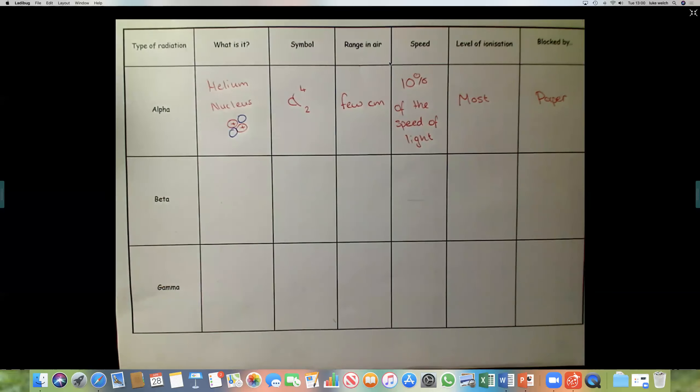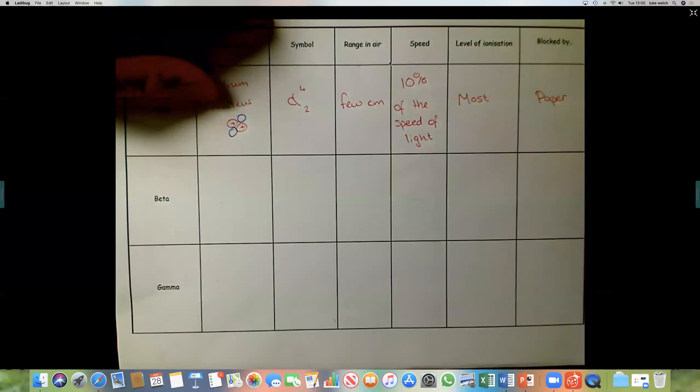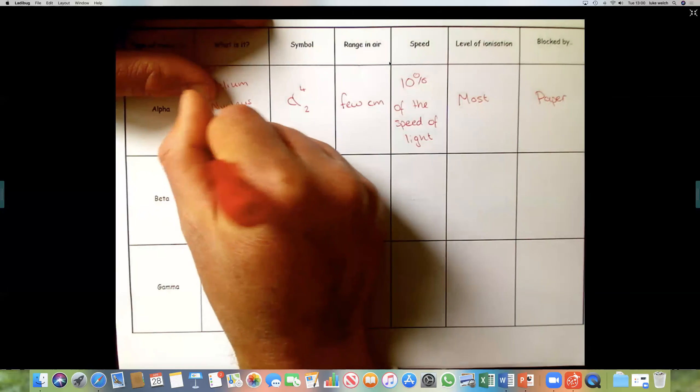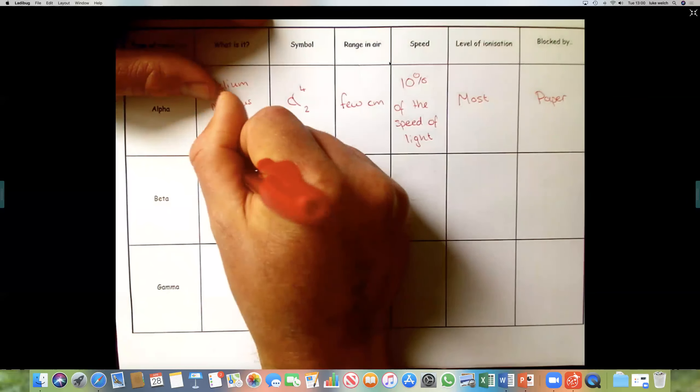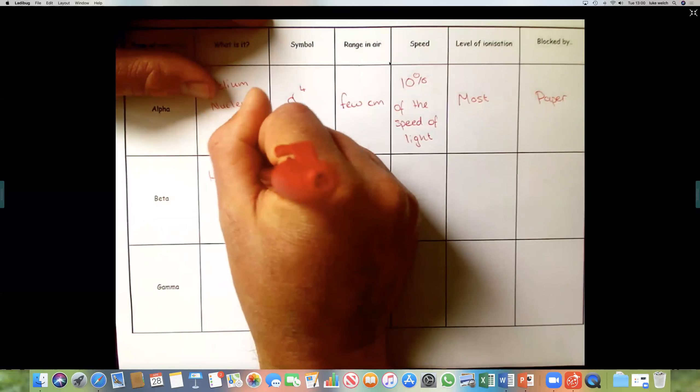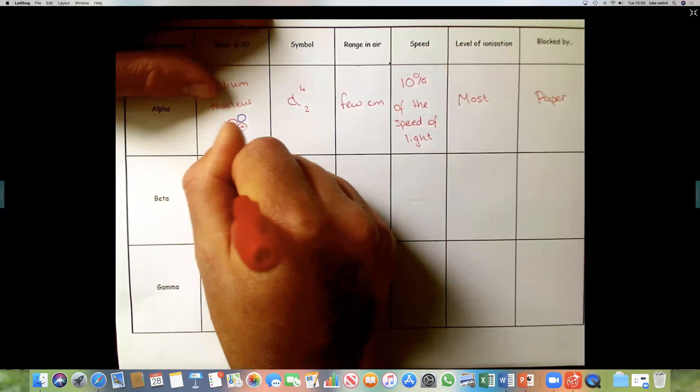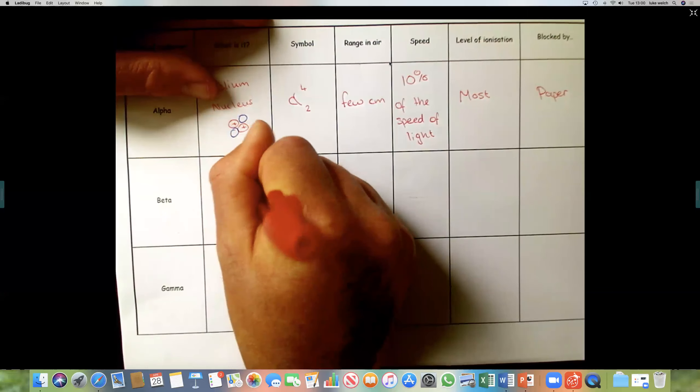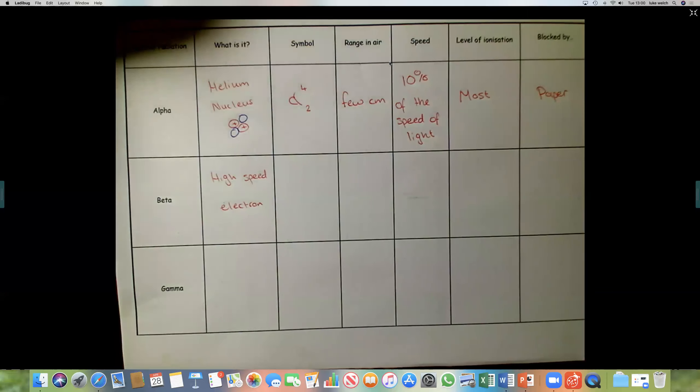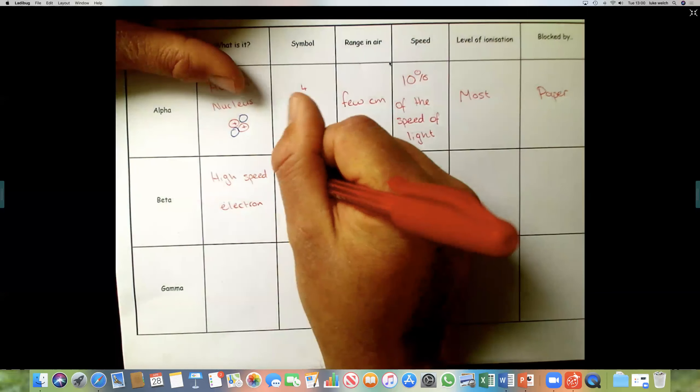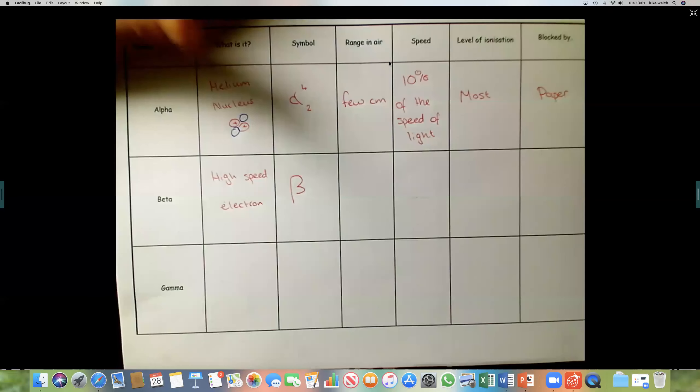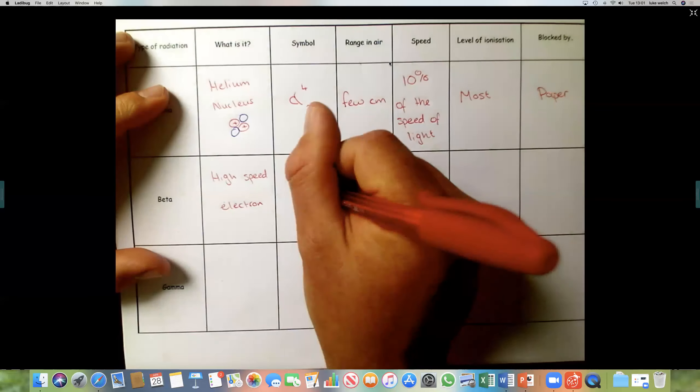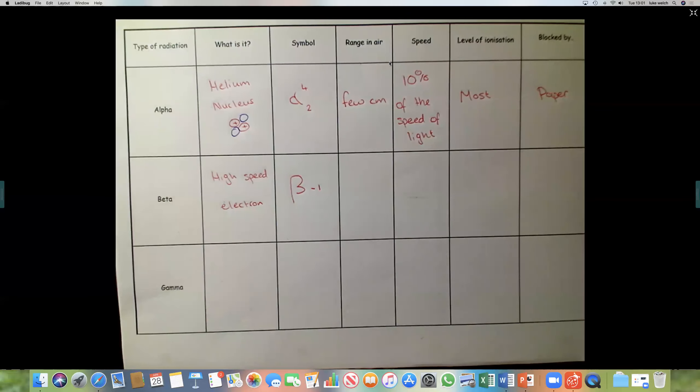Moving on to beta. Beta is something that, and I still can admit, and it is a high speed electron. And the symbol looks like this. And it's ejected an electron. So it looks like that.